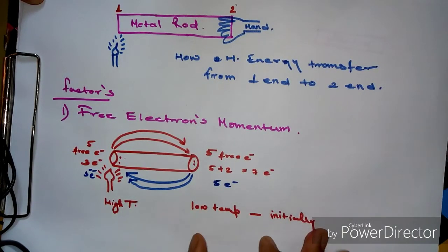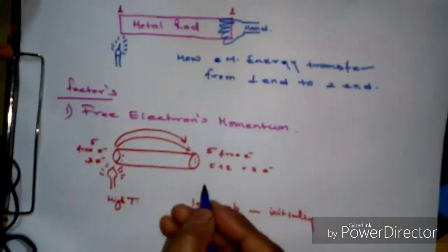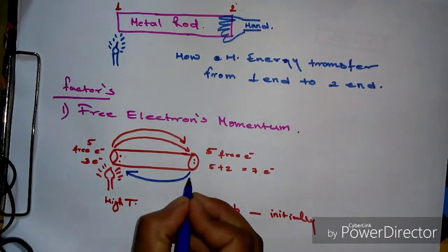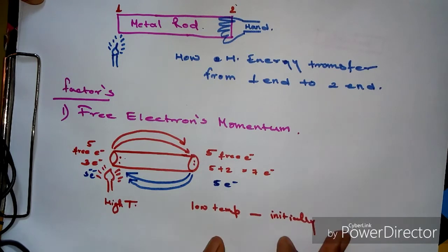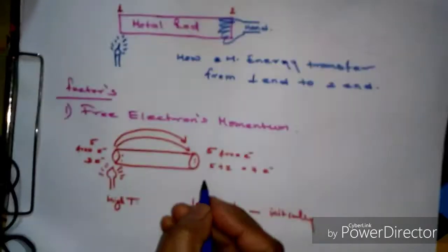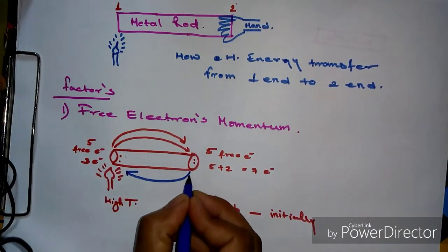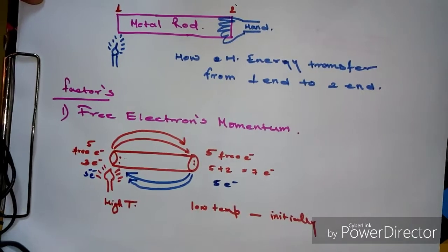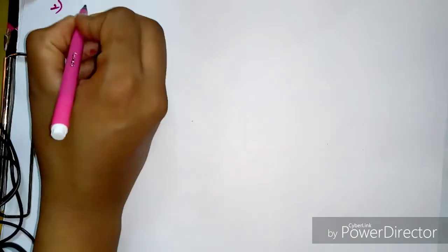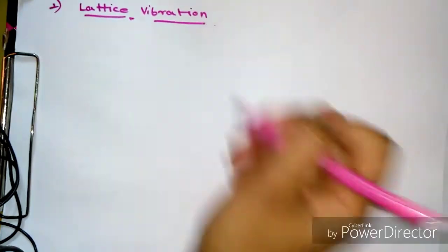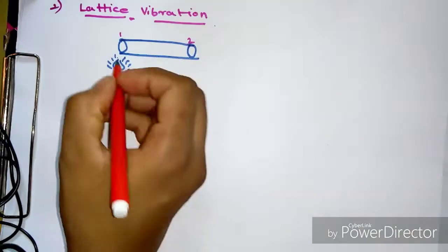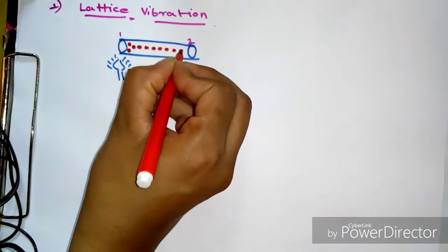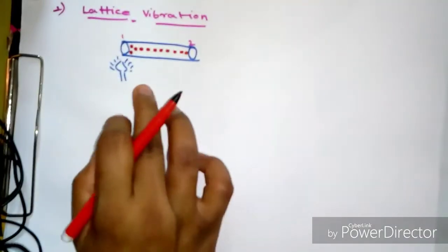After electron transfer, an imbalance occurs — for example, end two may have seven electrons. To overcome this imbalance, the electrons at end two, which were stationary, also start to move back toward end one, restoring electron balance. The second factor is lattice vibration. At the heated end, lattice vibration increases due to continuous heating; the lattice vibrates at its position and transfers energy to adjacent lattices, propagating energy along the material.